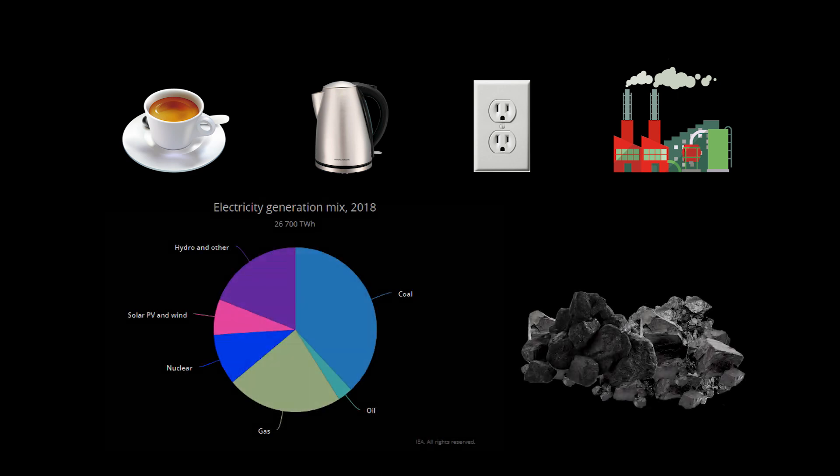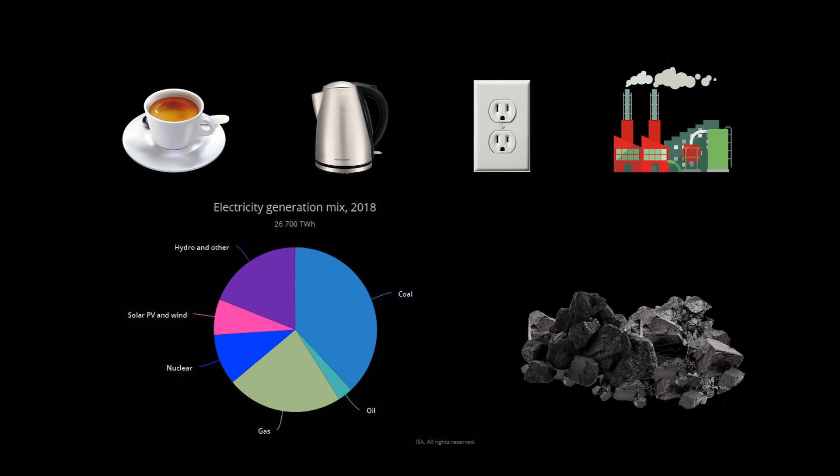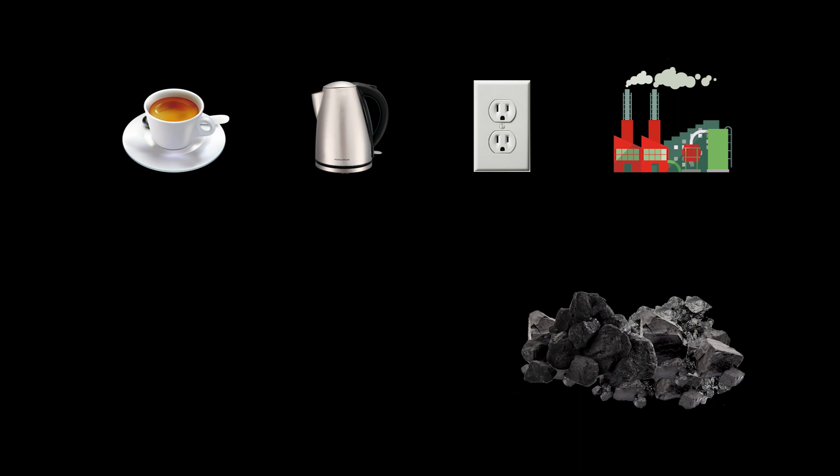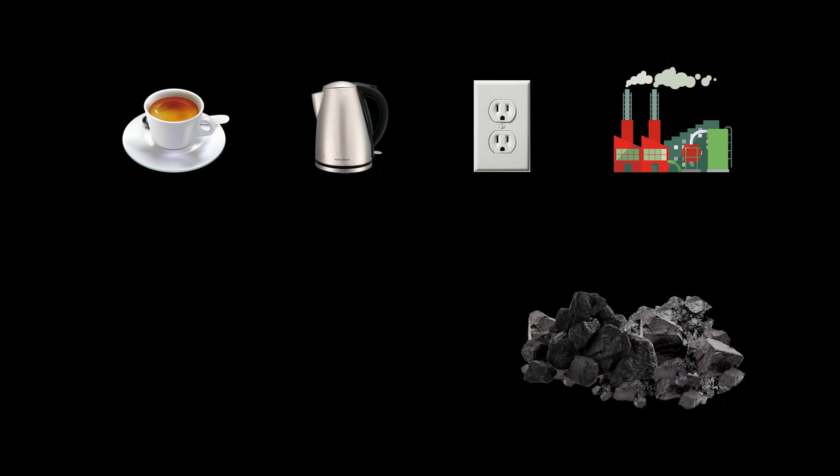That source is predominantly coal or natural gas. These two sources accounted for 61 percent of electricity generation worldwide in 2018. While natural gas does produce 45 percent less carbon dioxide than coal, it is still a contributor. So to produce the energy you need for your tea, it burns some coal.